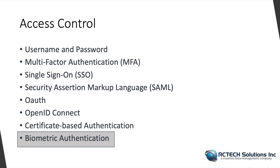Biometric authentication uses unique physical or behavioral characteristics of individuals — such as fingerprints, facial features, or voice patterns — to verify identities. These authentication mechanisms, used individually or in combination, provide various levels of security and user experience.